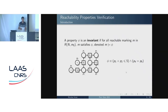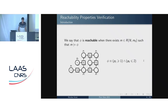We are interested in the verification of reachability properties. A property is invariant if all reachable markings satisfy it. For example, a property is invariant if we always have the same number of tokens in place P4 and P5, and the number of tokens in P1 and P2 is always smaller than 5. A property is reachable when there exists at least one reachable marking satisfying it — for instance, having more than one token in P1 and fewer than two tokens in P6.